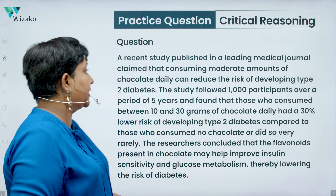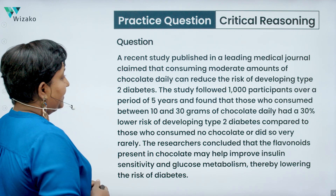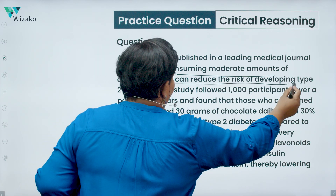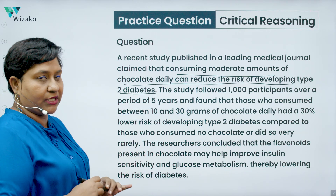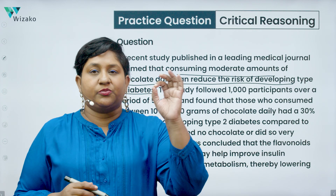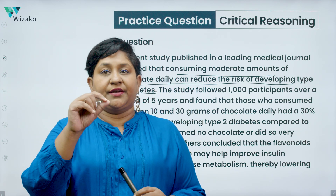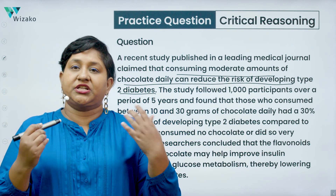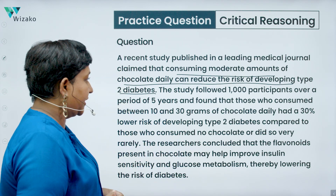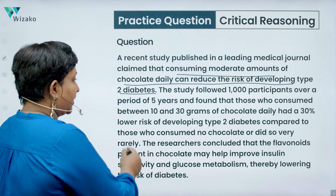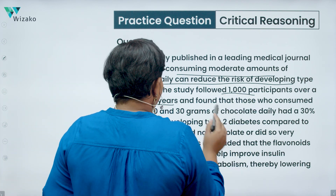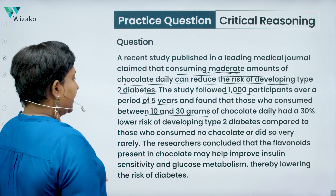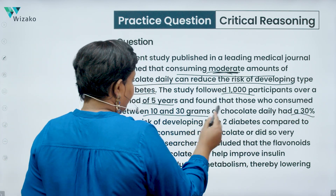What do we have in this argument? A recent study published in a leading medical journal claimed that consuming moderate amounts of chocolate daily can reduce the risk of developing type 2 diabetes. This is ultimately the conclusion of the argument. They followed 1,000 participants over five years and found that those who consumed between 10 and 30 grams — what they mean by moderate amounts — of chocolate daily had a 30% lower risk of developing type 2 diabetes.